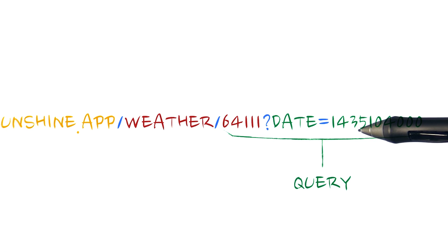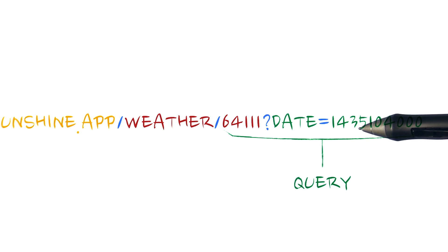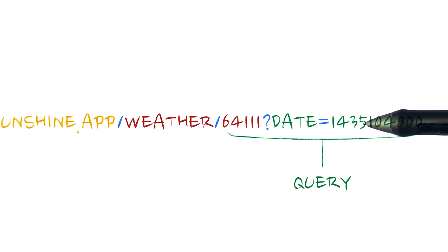A URI is the primary piece of data that is passed in these intents. In Sunshine, we'll leverage this to start the detail view with a URI that points to the weather on a specific day. The detail view uses this URI to query the weather provider and get the right weather data to display.